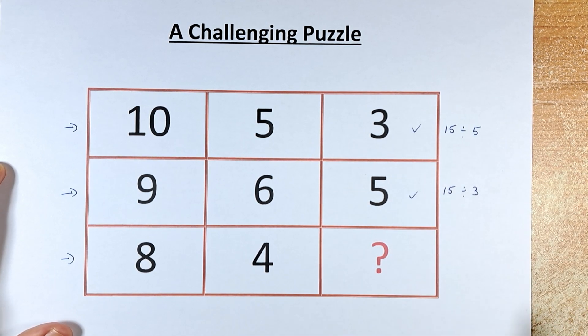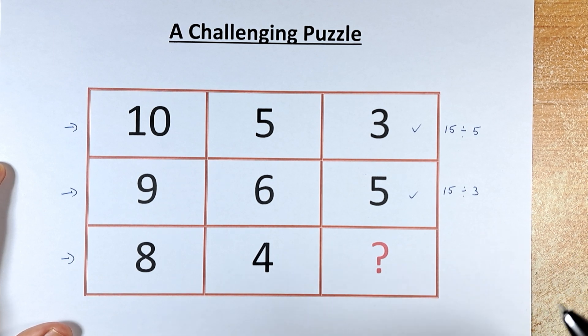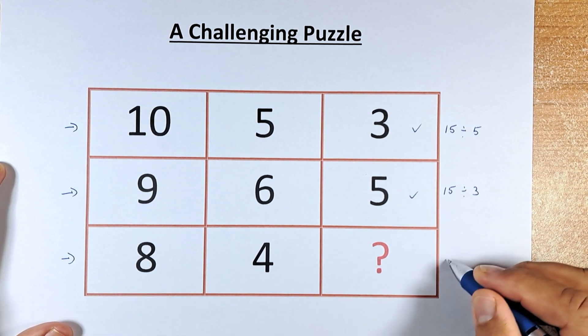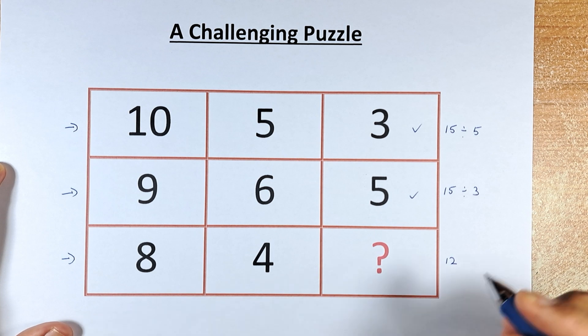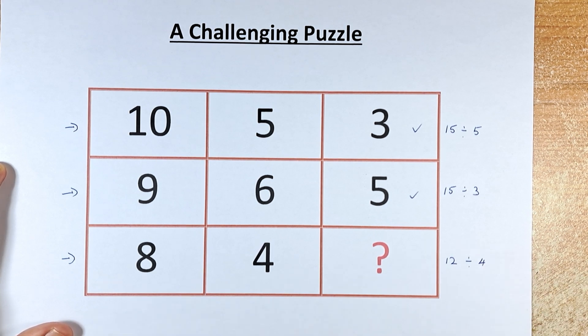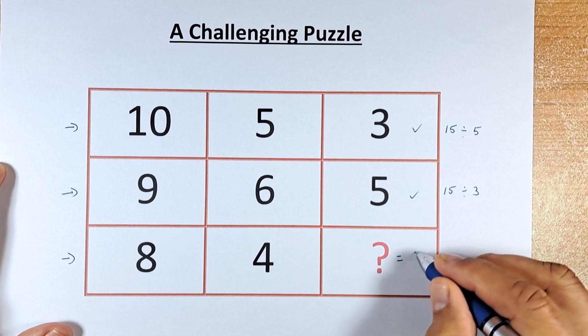So in our last row, 8, 4 and the question mark, this is how we're going to do it. So 8 plus 4 is 12. And then 8 minus 4 is 4. And then we divide 12 by 4, and the question mark equals 3.